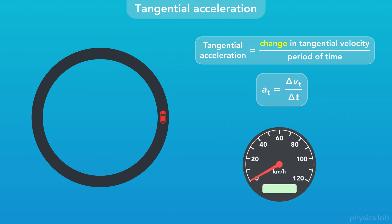If this car starts with a tangential velocity of 0 kilometers per hour and then it speeds up over time, then the car is experiencing tangential acceleration.